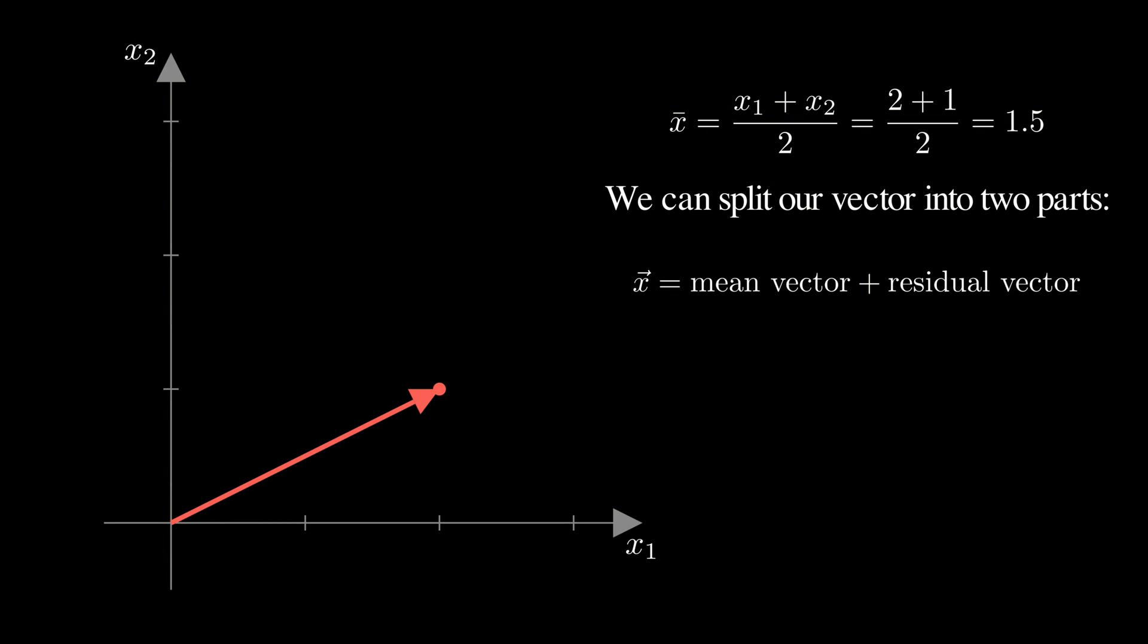The mean vector is just our mean value, 1.5, times a vector of 1's, so that's the vector 1.5, 1.5.